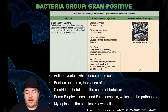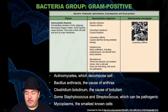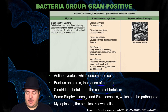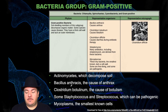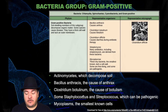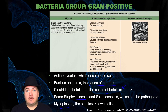Next phylum is the gram-positive bacteria. Within this phylum, we have bacteria that cause anthrax, bacteria that cause botulism, bacteria that can be pathogenic like Staphylococcus and Streptococcus, and the smallest known cells to exist — the mycoplasms. You've probably heard of anthrax, staph infections, and strep infections — those all come from these bacteria.